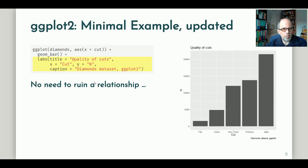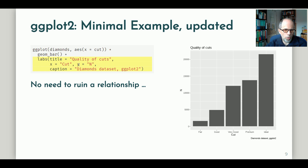I just extend my minimal example a little bit to specify axis labels. The highlighted code — it's three lines but quite self-explanatory — specifies a title, an x-axis label, a y-axis label, and even a caption that indicates the data source. So doing that, we don't have to ruin a relationship.